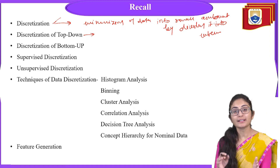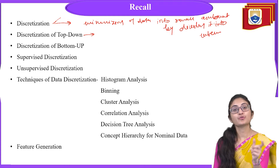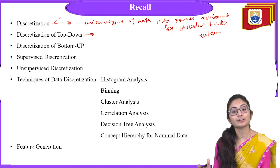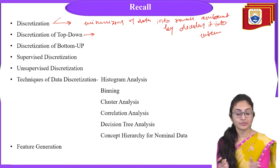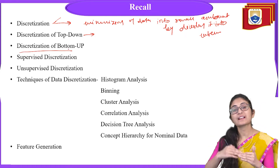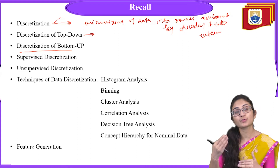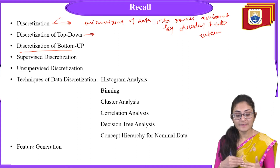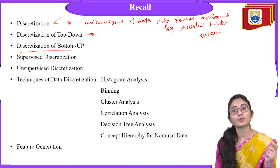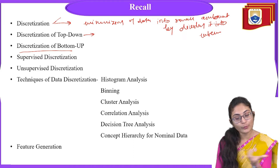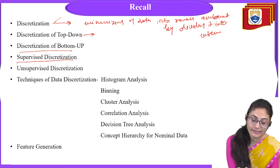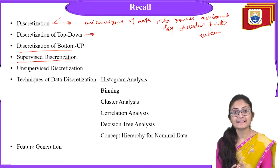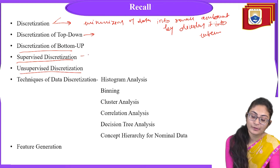In top-down discretization, you move from top to down — first you divide the data into intervals and then the data is merged. In bottom-up discretization, you start from the bottom and work upward, meaning you first split the data into intervals and then merge the data.